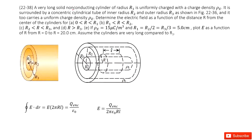We have a non-conducting cylindrical object with inner radius R1 and R2, and then we have another shell — still non-conducting — with radii R2 and R3, as shown in the picture. Both of these two objects carry the charge density rho_e. We need to determine the electric field at different locations.